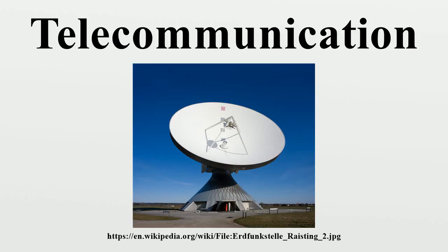Sir Charles Wheatstone and Sir William Fothergill Cooke invented the electric telegraph in 1837. The first commercial electrical telegraph is purported to have been constructed by Wheatstone and Cooke and opened on 9 April 1839. Both inventors viewed their devices as an improvement to the existing electromagnetic telegraph, not as a new device. Samuel Morse independently developed a version of the electrical telegraph that he unsuccessfully demonstrated on 2 September 1837. His code was an important advance over Wheatstone's signaling method.